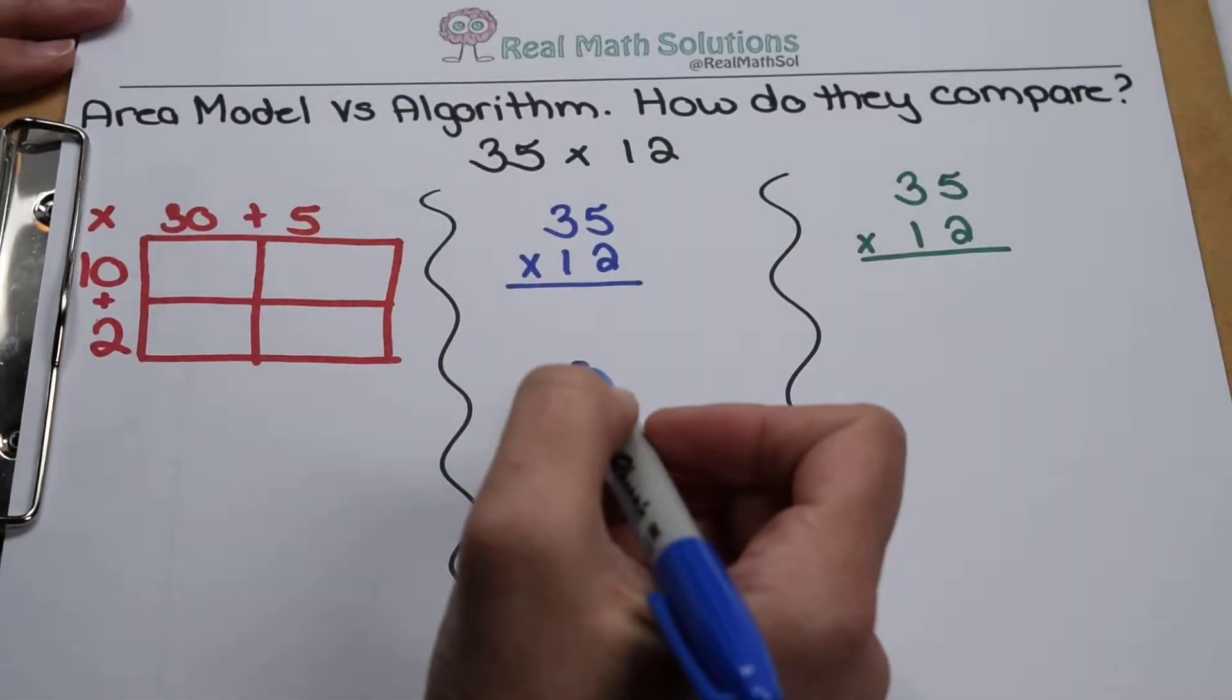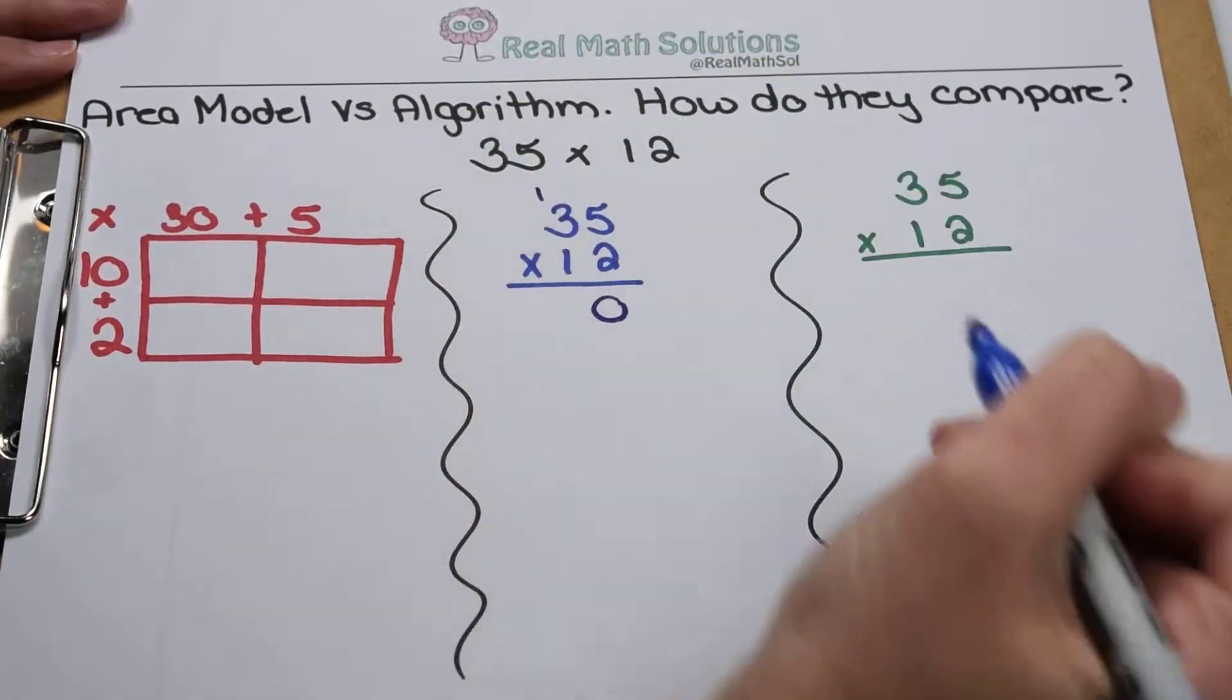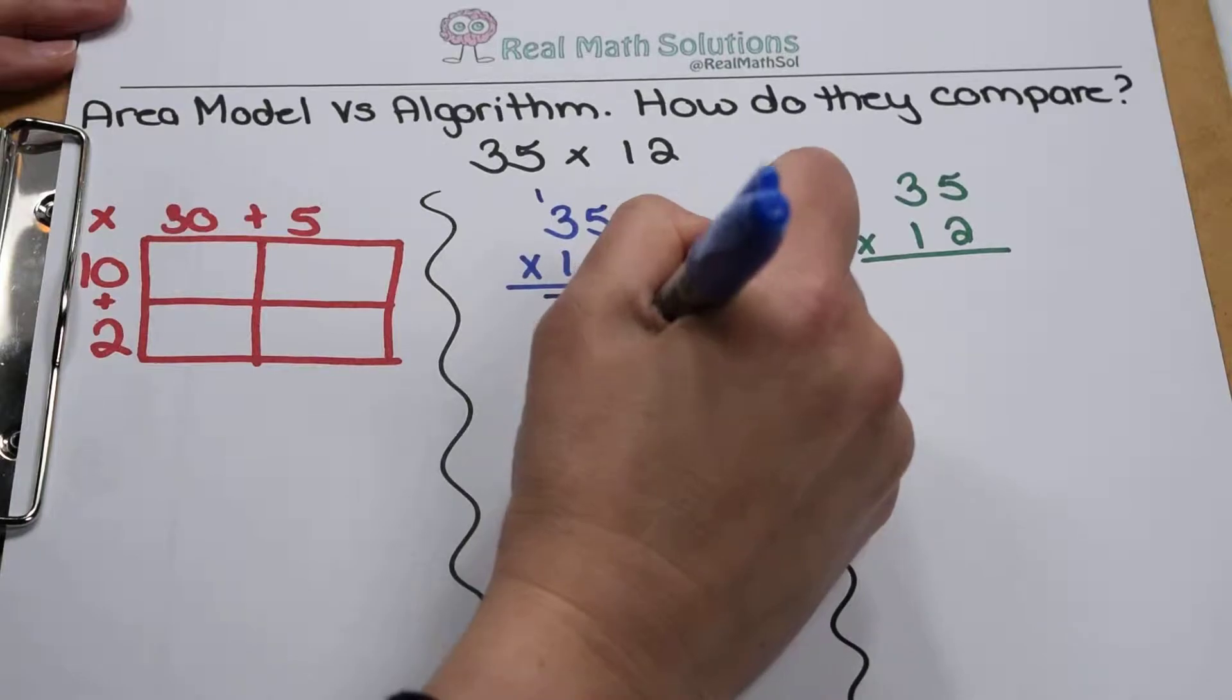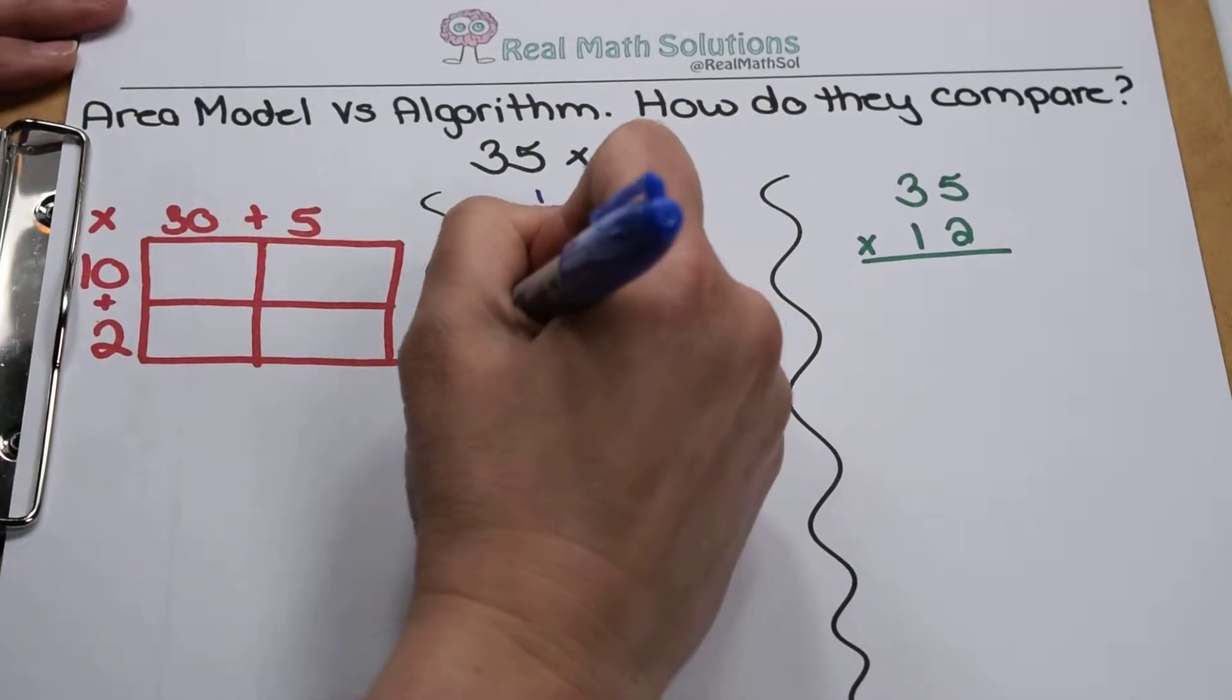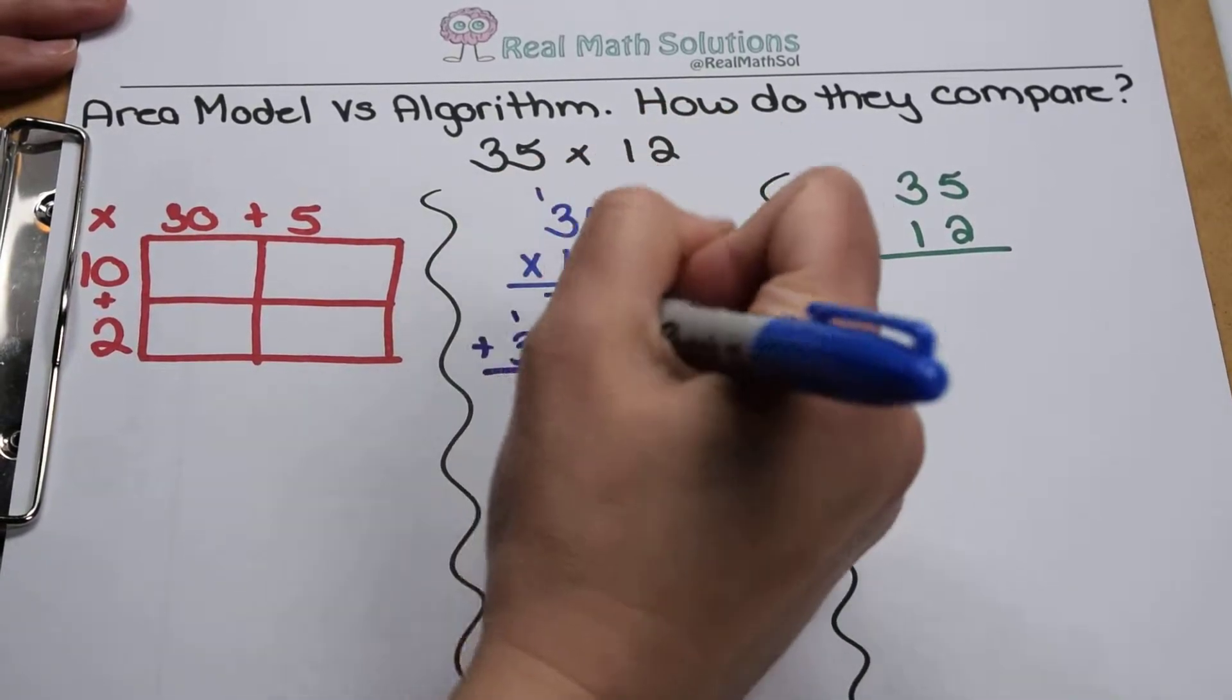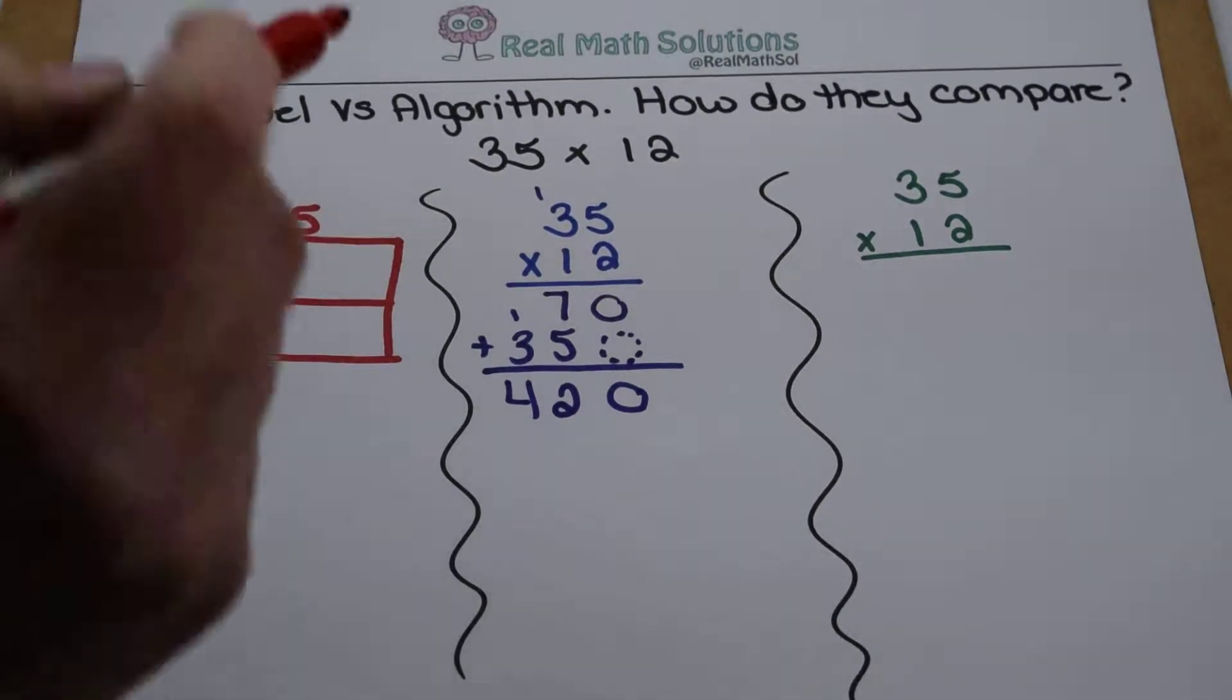We'll start with the traditional algorithm. When I multiply 35 by 12, 5 times 2 is 10, carry my 1, 3 times 2 is 6 plus 1 is 7. On my next row I need a placeholder of 0, 5 times 1 is 5, 3 times 1 is 3. When I add those together, 0 and 0, 7 and 5 is 12, carry my 1, 3 and 1 is 4. So I pretty efficiently come out with 420.